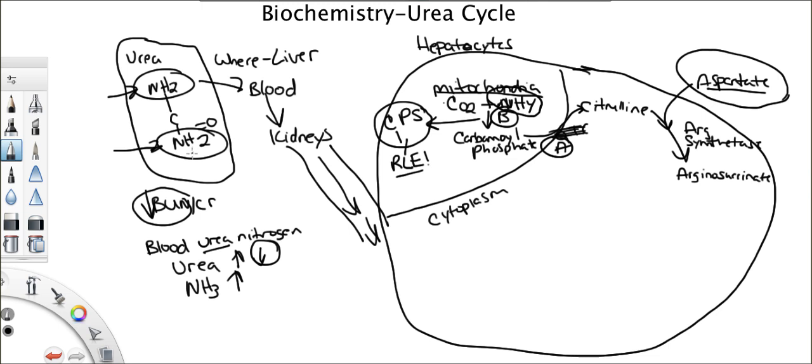Now, the second thing is know the structure. Because if they won't be nice enough to just show you urea, they'll actually just show you the NH2C, NH2 with the oxygen on it, and then expect you to know what exactly this is. So know the structure as well.